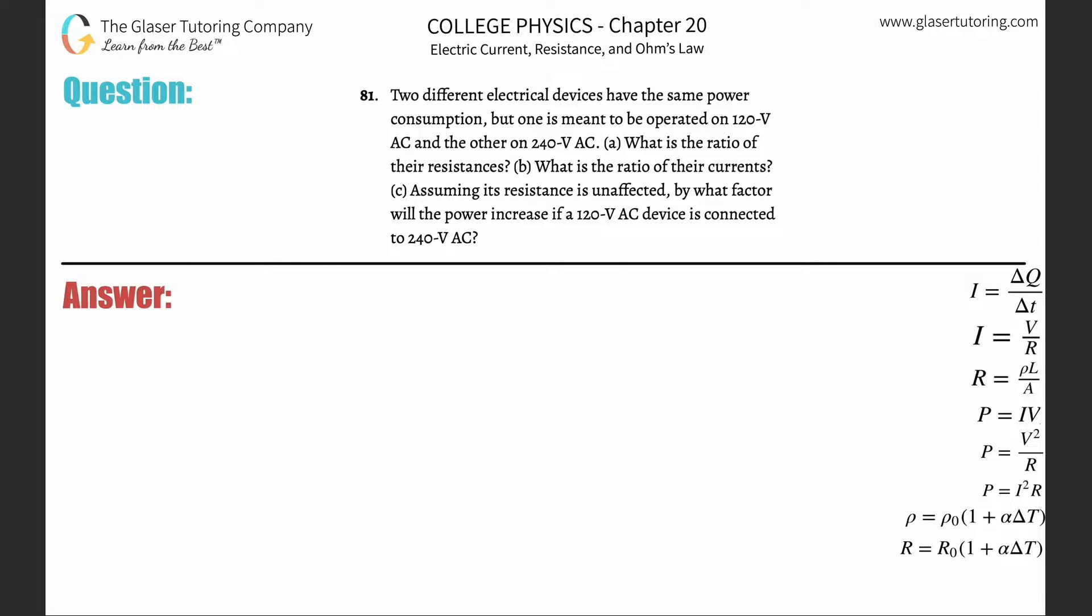Number 81: Two different electrical devices have the same power consumption, but one is meant to be operated at 120 volts and the other at 240. Part A: What is the ratio of their resistances?